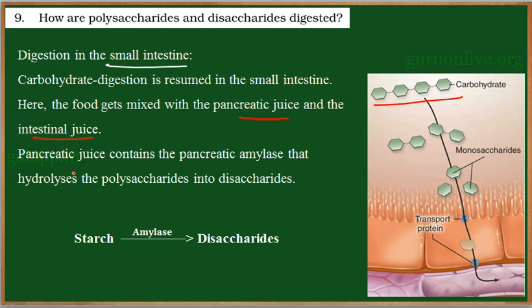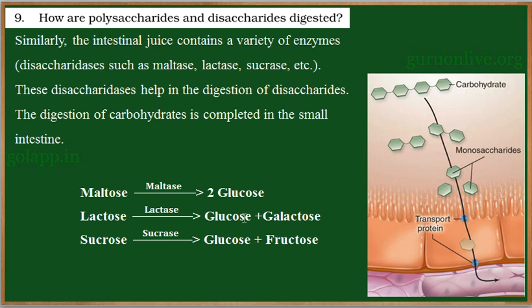The pancreatic juice contains a carbohydrate-digesting enzyme called pancreatic amylase. Amylase is the carbohydrate-digesting enzyme — it acts upon the polysaccharide and breaks them into disaccharides. When two monosaccharides are linked together, we call it a disaccharide. So amylase converts starch into disaccharides.